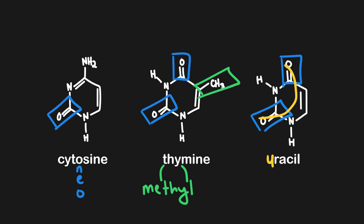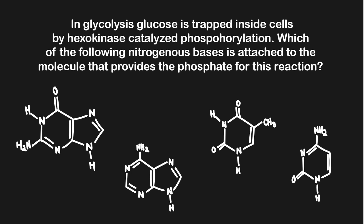This is how you can distinguish between the pyrimidines — make sure you're focusing on just those features. You don't need to be able to draw all of these different nitrogenous bases. You really need to be able to recognize them, because they're going to give you the structures in the answer choices.